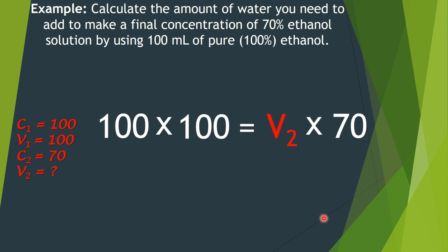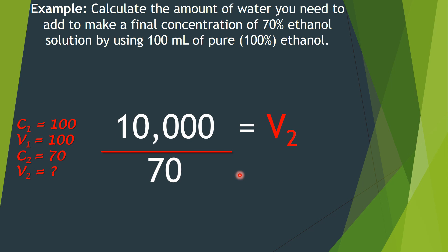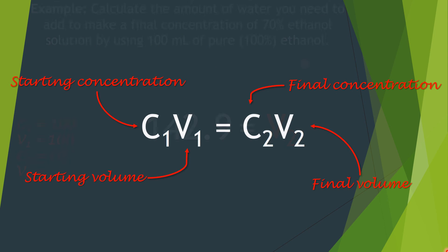Putting all this into the equation, we take 70 across to the other side and divide by 70. Doing 100 times 100 equals 10,000, and 10,000 divided by 70 equals 142.9 millilitres — that is the final volume. Since the question asks for the amount of water to add, we do 142.9 minus 100, which equals 42.9 millilitres of water. So now you know how to use the C1V1 = C2V2 equation.